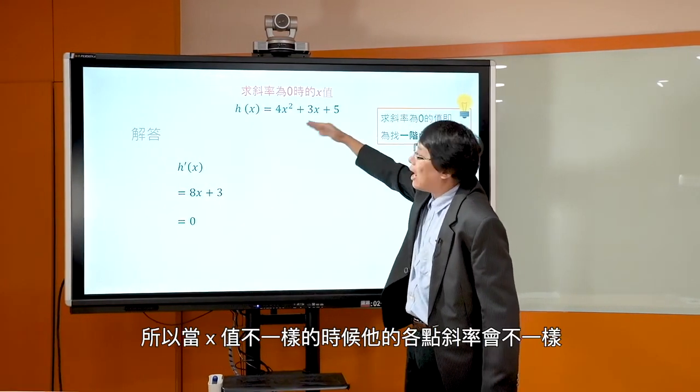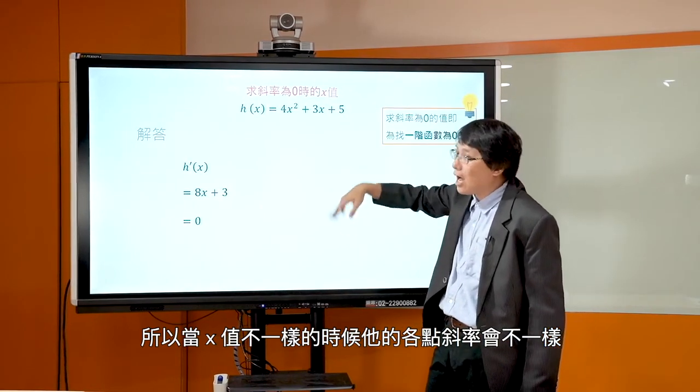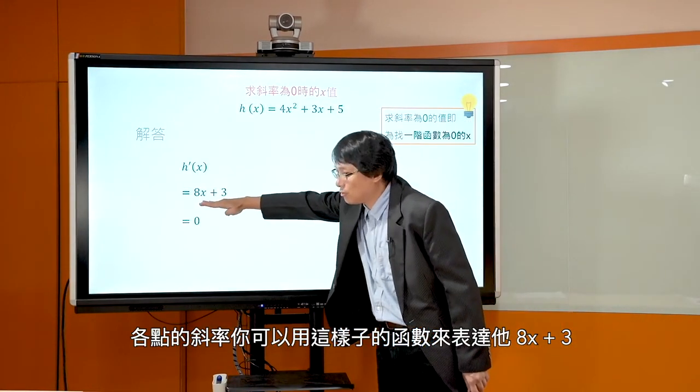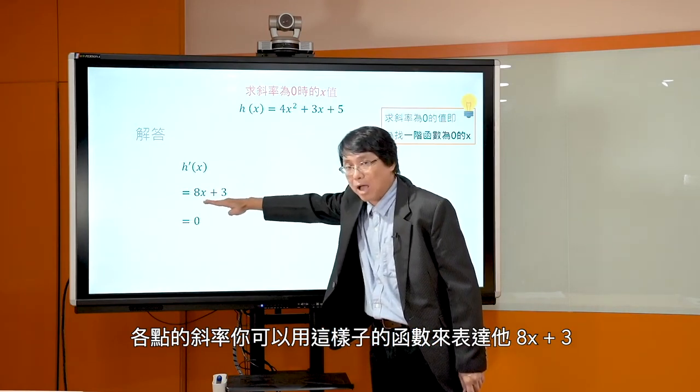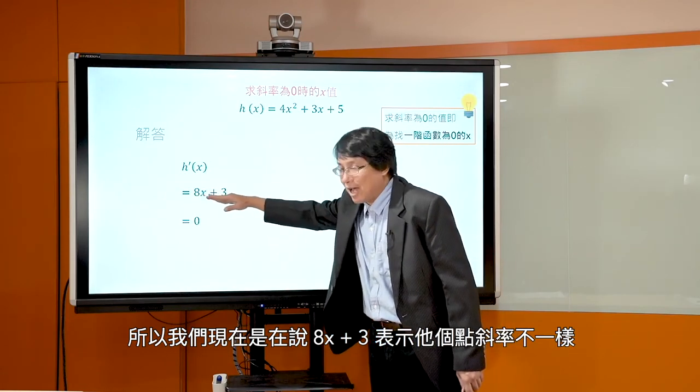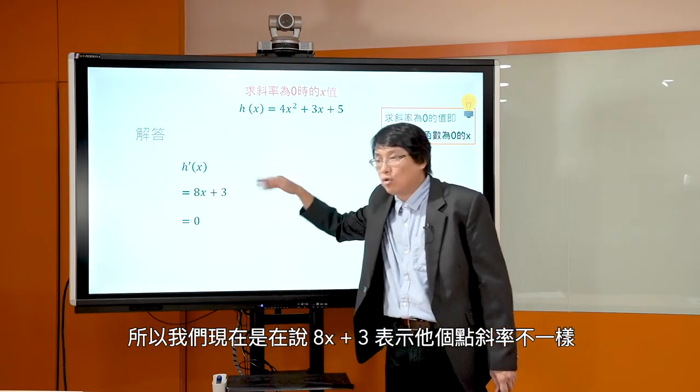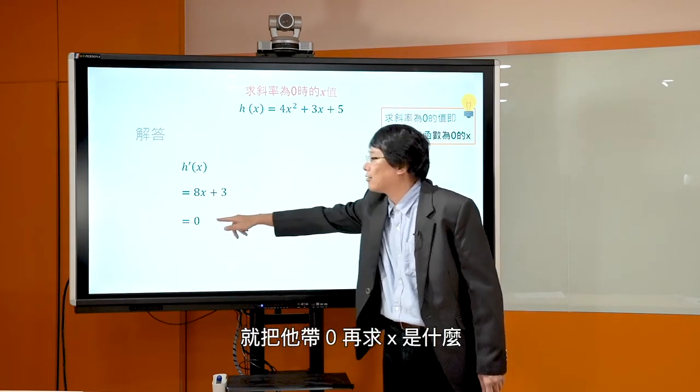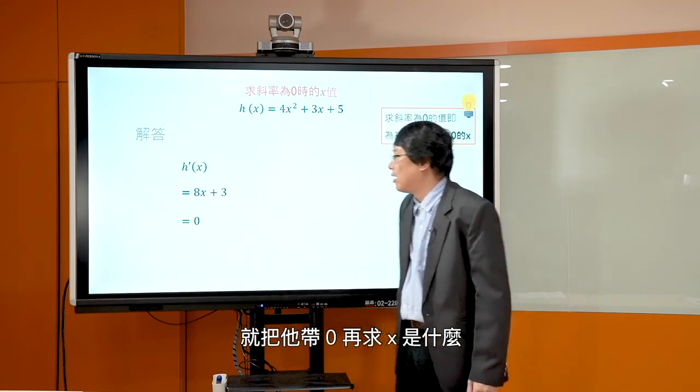所以 H'(x)，也就是H的一阶导函数会是 8x + 3。那我们现在是要求说斜率为0的时候它的x值是多少。所以从这个地方你就知道说，这个一阶导函数讲的是什么呢？它讲的是说这个 H，我们说这个是非线性函数，所以当x的值不一样的时候，它的各点斜率会不一样。所以它各点的斜率你可以用这样子的一个函数来表达它：8x + 3。所以我们现在是说什么呢？在说 8x + 3 表示说它各点斜率不一样，当它斜率等于0的时候，那点是什么？你就把它带0，然后再求x是什么。